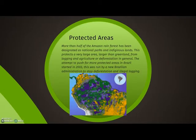Protected areas. More than half of the Amazon rainforest has been designated as national parks and indigenous lands. This protects a very large area — larger than Greenland — from logging, agriculture, and deforestation in general. The push for more protected areas in Brazil started in 2003, run by a new Brazilian administration to stop deforestation and illegal logging.